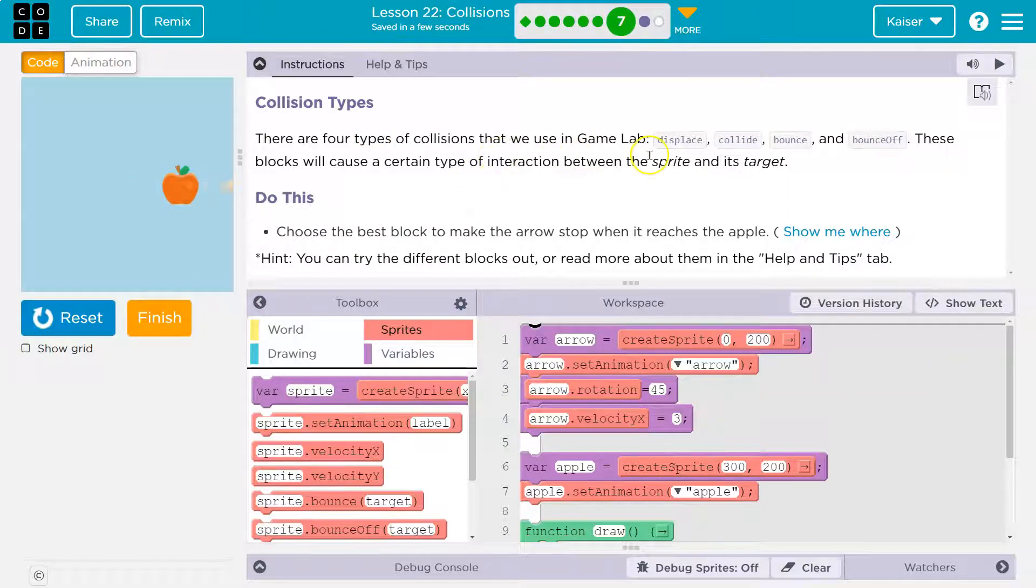There are four types of collisions that we use in game lab: displace, collide, bounce, and bounce off. These blocks will cause certain types of interactions between the sprite and its target, and we get to choose the sprite and target.